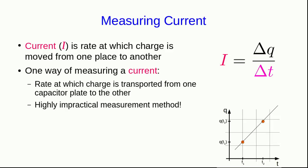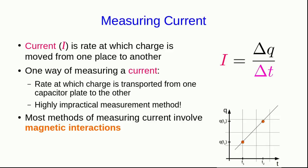But note, this is a highly impractical way of measuring current, which is why ammeters don't do it this way. The actual ways we measure current involve magnetic interactions, which is the next topic of the course.